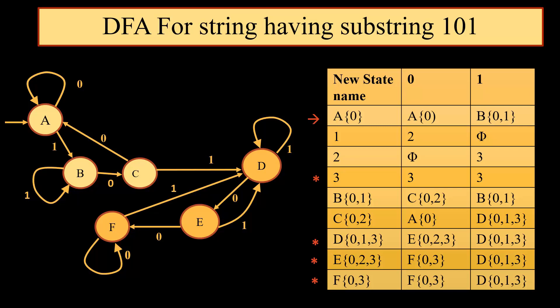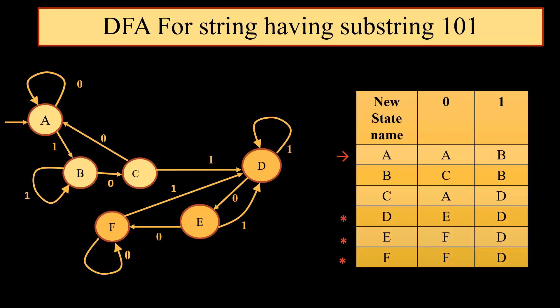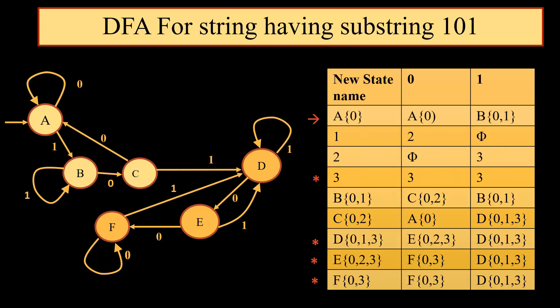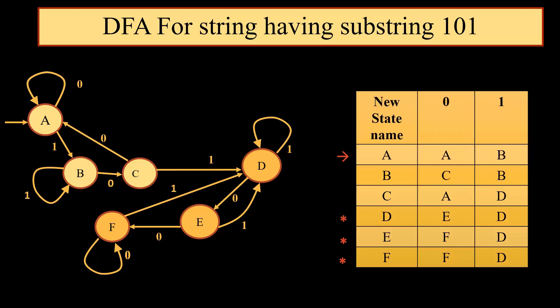We have given state number 0 as A, state {0,1} as B, {0,2} as C, {0,1,3} as D, {0,2,3} as E, and {0,3} as F. So this is the final DFA for all strings having substring 1, 0, 1. In this DFA, A is the start state and D, E, F are the final states. Why are they considered final states? Because the original final state was 3, and all states which have 3 in their set are final states. So D, E, F contain 3 and hence they are considered final states.